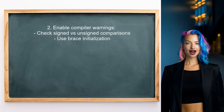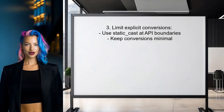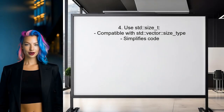Another suggestion is to enable all compiler warnings related to signed versus unsigned comparisons. Using brace initialization can also help catch narrowing conversions as errors. If you prefer using 32-bit values, limit explicit conversions to a few places and use static_cast at API boundaries to keep your API clean and manageable. For a more flexible approach, consider using std::size_t, which is typically compatible with std::vector::size_type and can simplify your code.